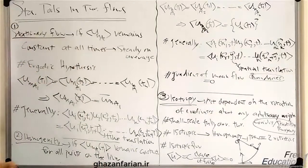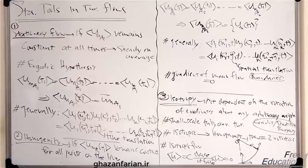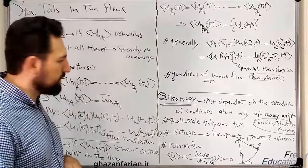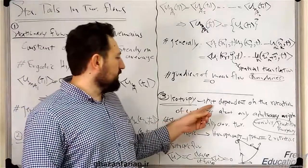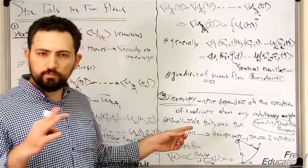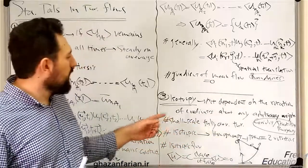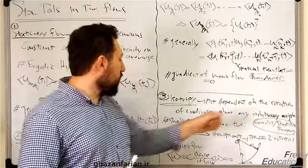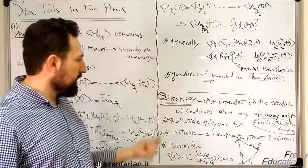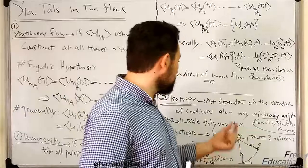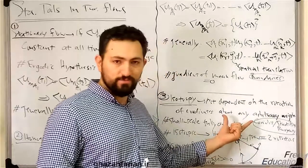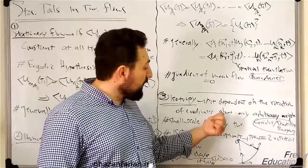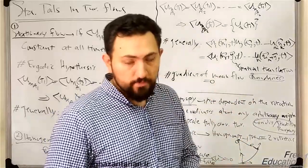First, part of turbulent flows is isotropic flow, or isotropy. I want to present the definition of isotropy in turbulent flows: when the different flow properties are not dependent on the rotational coordinates about any arbitrary origin. This last part of the definition is very important — the rotation about any arbitrary origin.